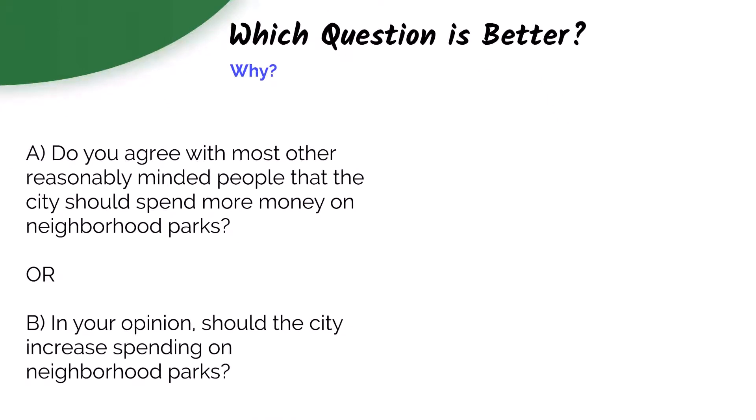Let's compare two example questions to see which one is better. In A here, do you agree with most other reasonably-minded people that the city should spend more money on neighborhood parks? Or B, in your opinion, should the city increase spending on neighborhood parks? So, what do you think? In this case, B is the better question because A has bias because it is encouraging the respondent to answer in a particular way by highlighting that other reasonably-minded people think we should spend more money on parks.